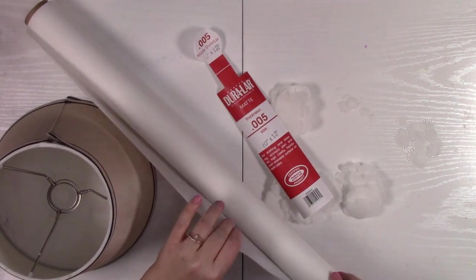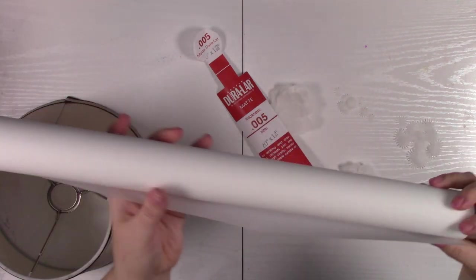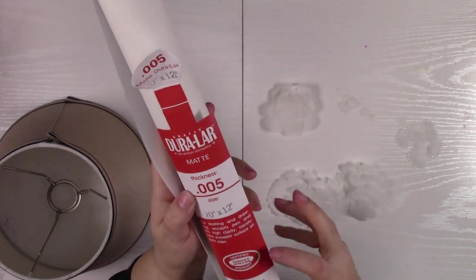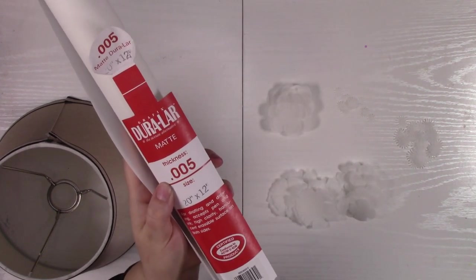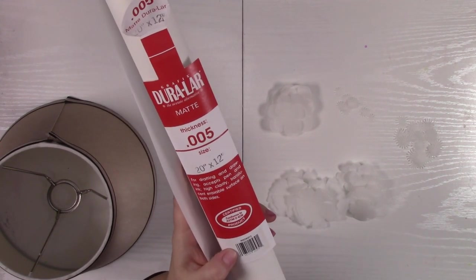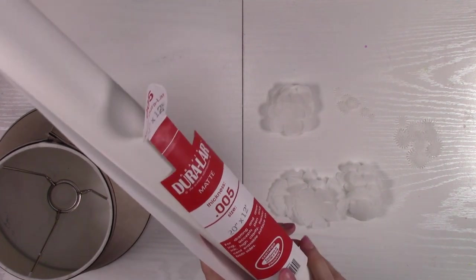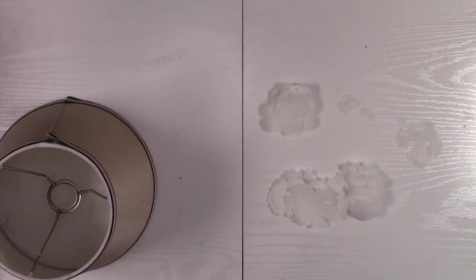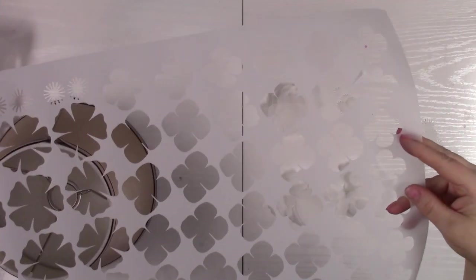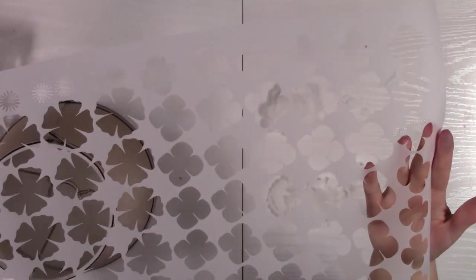So just really quick, I am using a roll of Matt Duralar. Here are the specifics about it. It comes on a roll, it is 20 inches wide by 12 feet long. So you can do all sorts of really amazing things with this version. I've been cutting out flowers with my Cricut machine. You could use any machine you want, you could punch it out if you have a flower punch, you could just hand cut them, whatever you want to do.